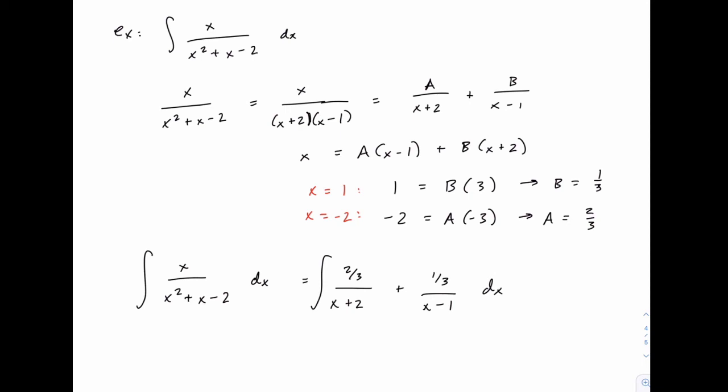I won't take the time to go through the u substitution, but for the first term, for instance, you would let u equal x plus 2, for the second term you would let u equal x minus 1. Each of them would just be a constant divided by u, which would turn into the natural log function.